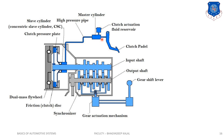Looking at the cross-section view: there is a high pressure pipe and master cylinder. When the clutch pedal is applied, it engages the clutch. These are the gear mechanisms where the driver selects the drive. Input shaft and output shaft are there. There is a friction clutch, dual mass flywheel, gear actuation mechanism, and synchronizers.